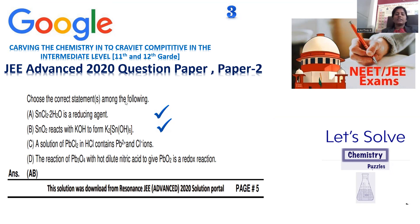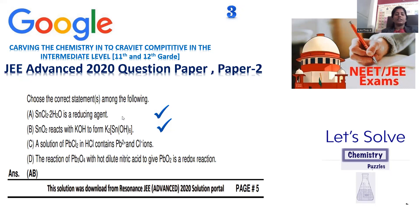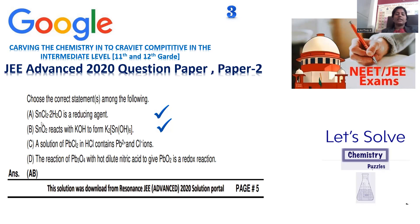Choose the correct statements from the following options A, B, C, D. Statement A: SnCl2·2H2O is a reducing agent — this is correct. Statement B: Sn reacts with potassium hydroxide to form K2[Sn(OH)6] — this is also correct. The remaining options are wrong. Sn²⁺ is a good reducing agent; it itself gets oxidized to +4, so it acts as the reducing agent. SnCl2·2H2O being a reducing agent is confirmed.